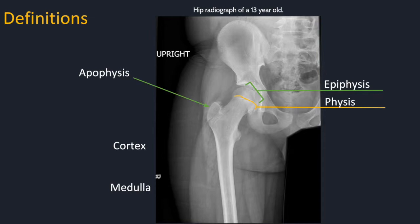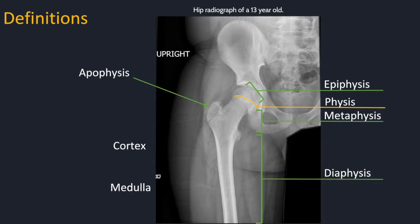The apophysis is similar to the epiphysis, but it is a secondary ossification center that does not contribute to longitudinal length of the bone. The metaphysis is a transitional portion with thinner cortex than the diaphysis. The diaphysis, also known as the shaft of the bone, has a thick cortex with cancellous bone. The enthesis is an area of tendon insertion; there are multiple throughout the body — the arrows here point to the anterior superior iliac spine where the sartorius inserts, and the anterior inferior iliac spine where the rectus femoris inserts. The trochanters and ischial spines are other examples of enthesis.